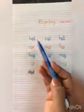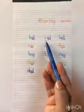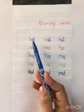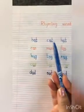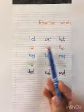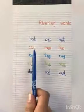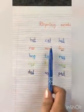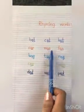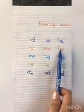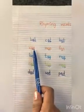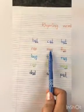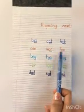Here: bat, cat, hat — the last two letters are the same. Same way: ken, man, fan — here also you can see that 'an' is the same.